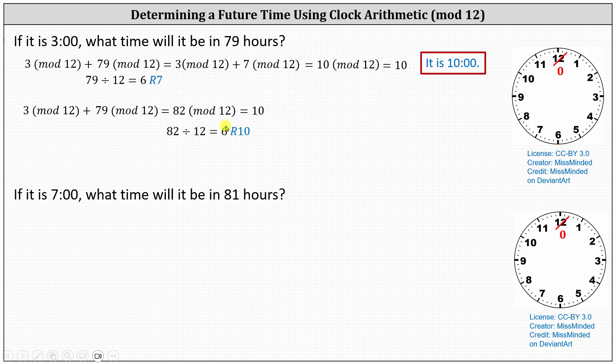If we did want to use the clock for this sum, we would start at zero and move ahead 82 hours. That would give us six complete rotations and then 10 additional hours. Let's go ahead and show that as well.